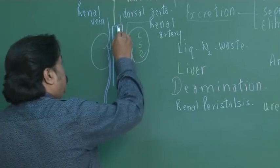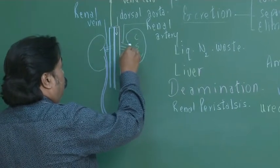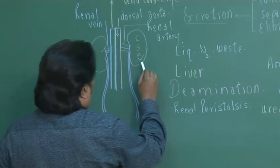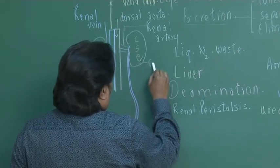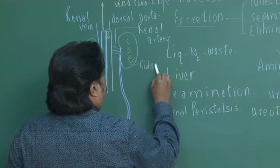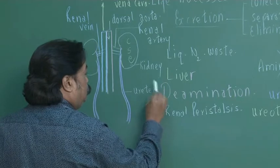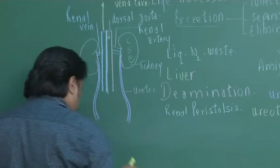This blood vessel is, I told you, is dorsal aorta, renal artery. This blood vessel is renal vein, inferior vena cava. This organ, that's the kidney. These tubes, we call them as ureter, they are long tubes.